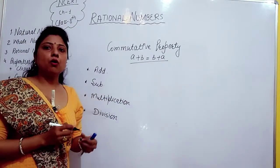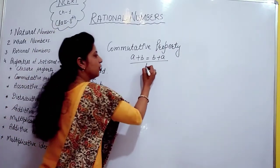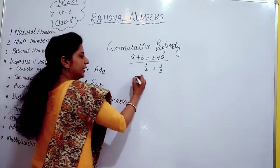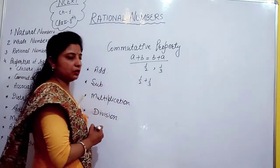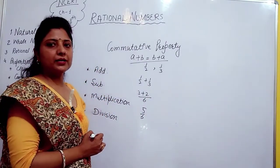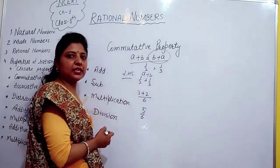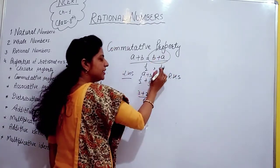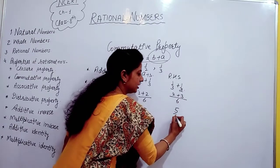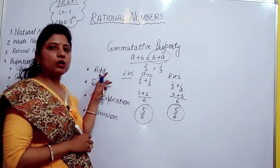First we check: does commutative property hold on addition? We take two rational numbers, 1/2 and 1/3. Left hand side: 1/2 plus 1/3 — LCM is 6 — gives 5/6. Right hand side: 1/3 plus 1/2 — also gives 5/6. Both sides are equal, so commutative property holds on addition.